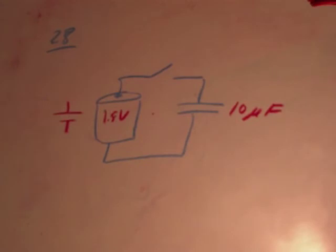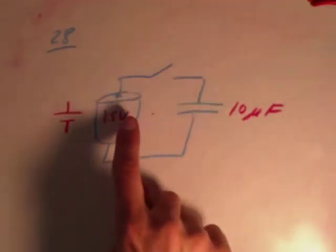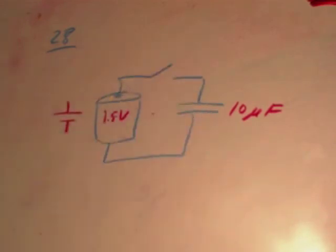What it wants to know is how much charge flows through the switch after the switch is closed. So when this is closed here, positive charge is going to flow into this plate, negative charge is going to flow into that plate, and the question wants to know how much charge must have flown.